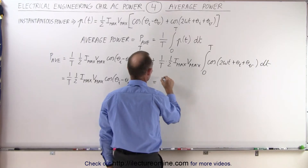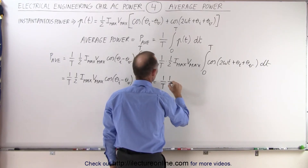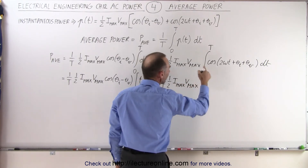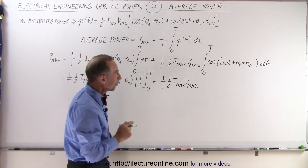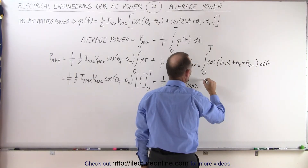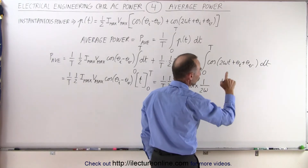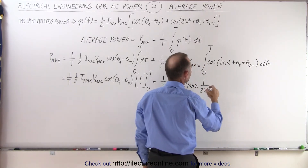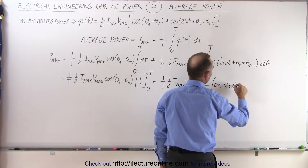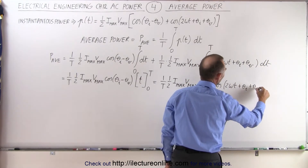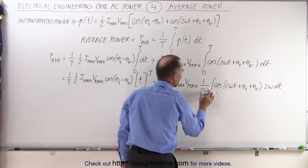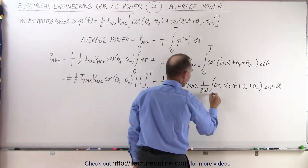For the second integral, the constant gives us 1 over t times ½ i_max v_max. The integral of a cosine is a sine, but we have cosine of 2ωt, so we need a 2ω dt differential. Therefore we multiply by 1 over 2ω, giving us 1 over 2ω times the integral of cosine(2ωt + θ_i + θ_v) times 2ω dt, evaluated from 0 to t.